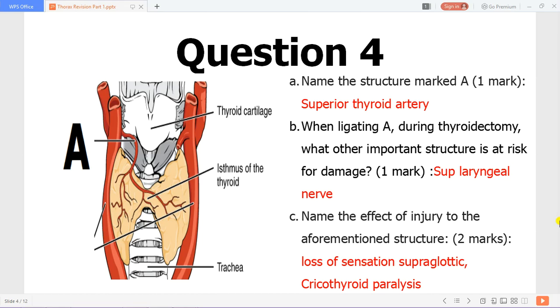This is a slide showing the thyroid. The artery level A is the superior thyroid artery and you have to protect the superior laryngeal nerve during thyroidectomy. The effect of injury to the superior laryngeal nerve is loss of sensation to the supraglottic compartment and also cricothyroid paralysis.